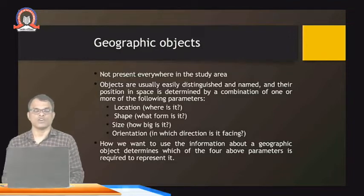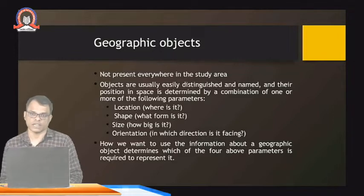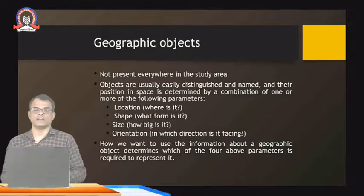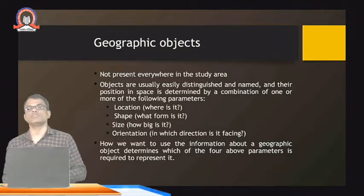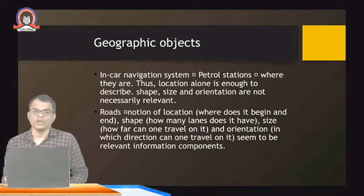The parameters are: first, location — where is it; shape — what form is it; size — how big is it; and orientation — in which direction it is facing. How we want to use the information about a geographic object determines which of these four parameters is required to represent it. Based on what you want to represent on the screen, you use one or more of these parameters.